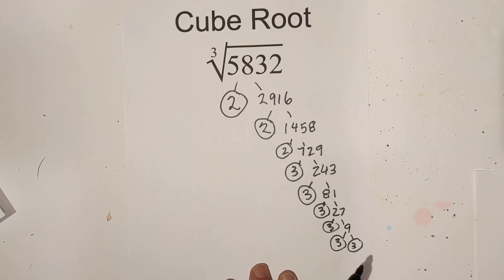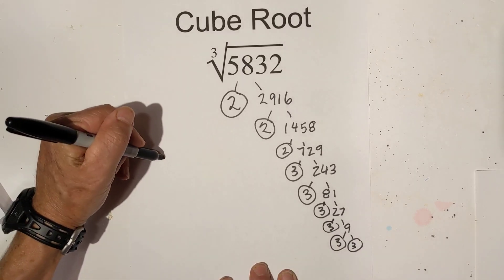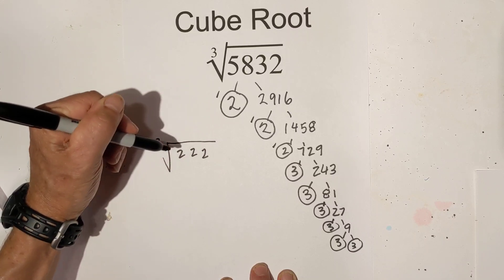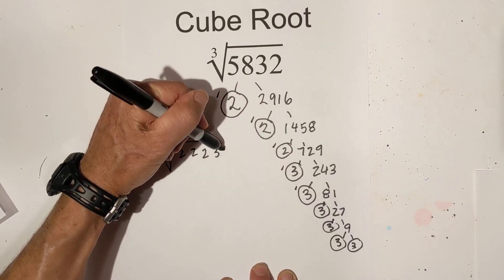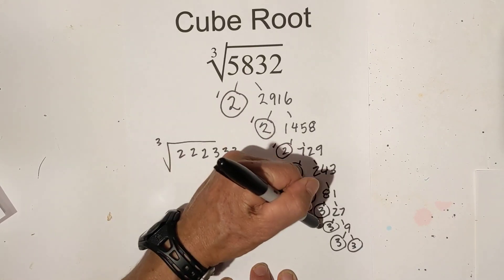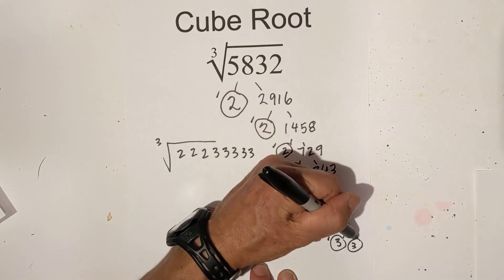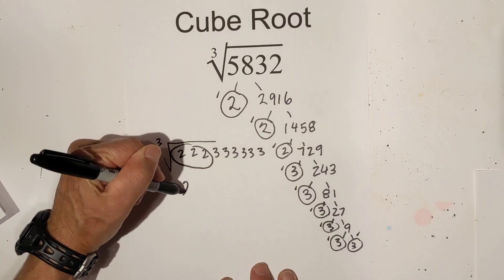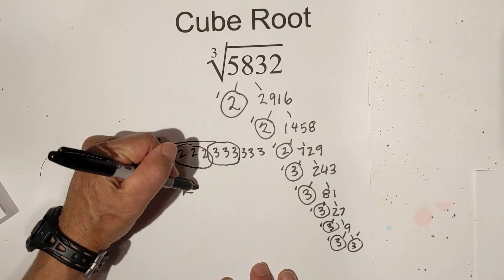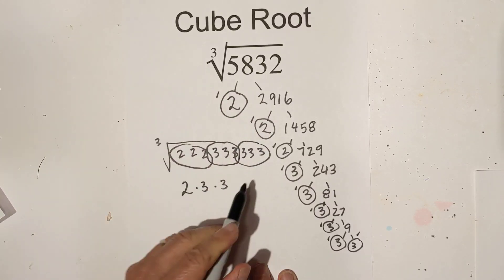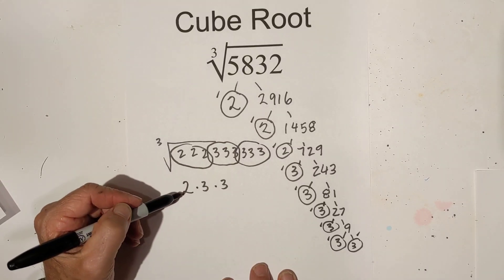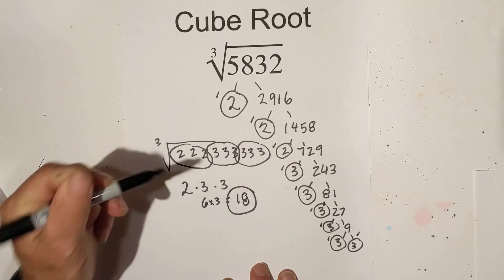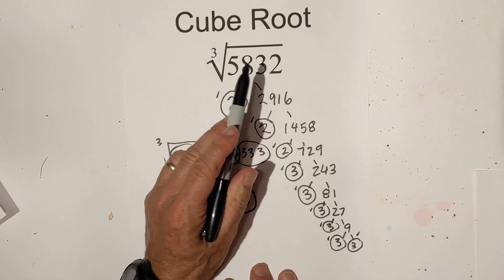Now you need to be very careful here because this is where you can make a mistake. So I'm going to check each of them: I've got a 2, a 2, a 2, a 3, a 3, a 3, a 3, a 3, a 3. Now I pull out the triplets. I have a triplet of 2s — write a 2. And a triplet of 3s, and then another triplet of 3s. I have nothing left under the cube root sign, so I just multiply: 2 times 3 is 6, 6 times 3 equals 18. So the cube root of 5,832 is 18.